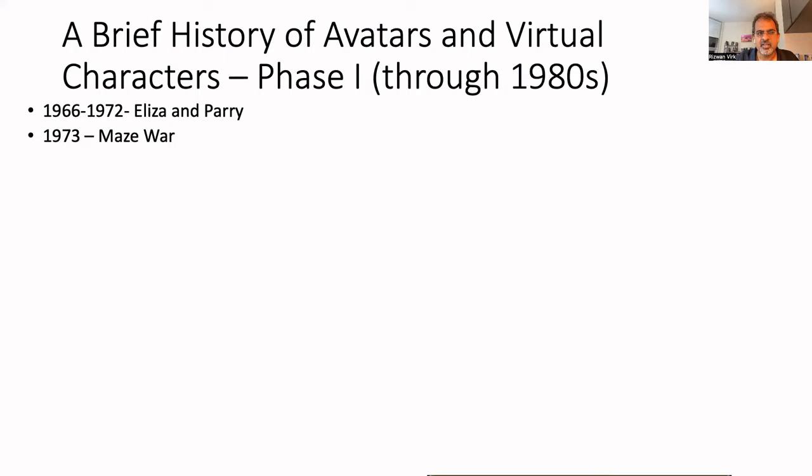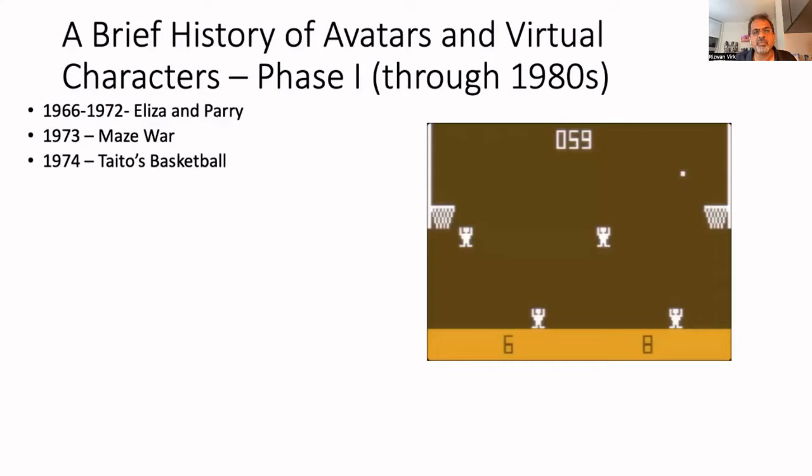The first actual graphical representation of a player was probably Taito's Basketball, which came out in 1974. It's a very simple representation — there's not even any sprite animation. It's just a basic bitmap of the character. We don't have the term avatar yet, but we do have a human representation.